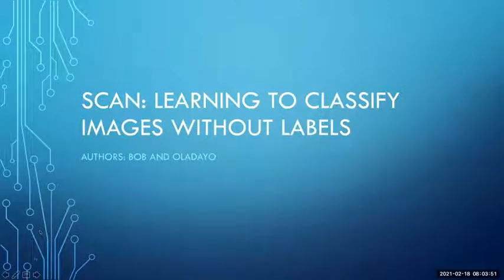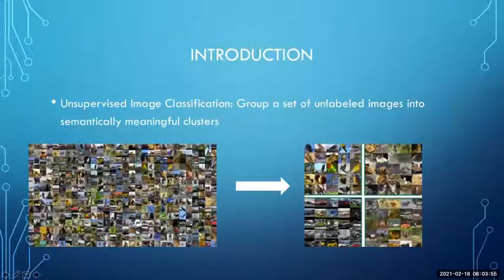SCAN is basically an acronym for semantic clustering by adopting nearest neighbors. The whole idea of SCAN is under unsupervised image classification, and the purpose is to group a set of unlabeled images into semantically meaningful clusters, as you can see from the image below. That's what SCAN intends to do.